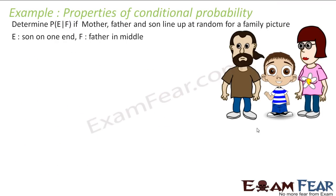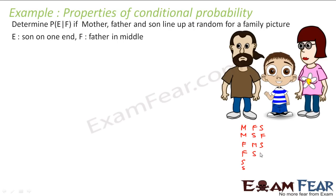One more example: find P(E|F) where mother, father, and son are lined up at random for a family picture. E is 'son is on one end' and F is 'father is in the middle'. There are 3 people so there are 3! = 6 possible arrangements: MFS, MFS — let me list them. With 3 positions, we get 6 possible orderings.